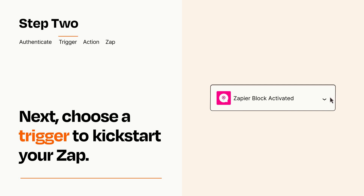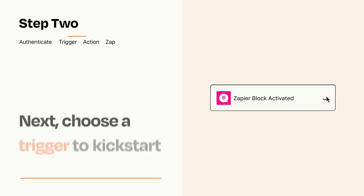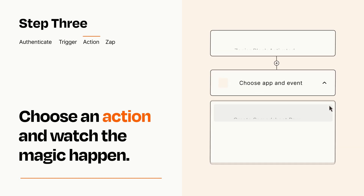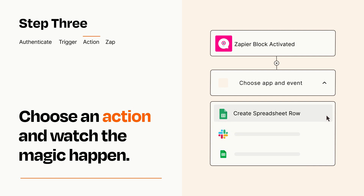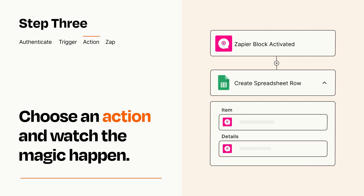This last part is where the magic happens. Choose the action you want to happen in your target app. You'll see a bunch of fields where you can specify the details of your Zap. You can type free form text or pull data in from your trigger step as needed.